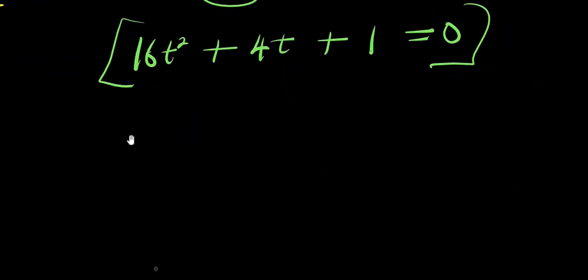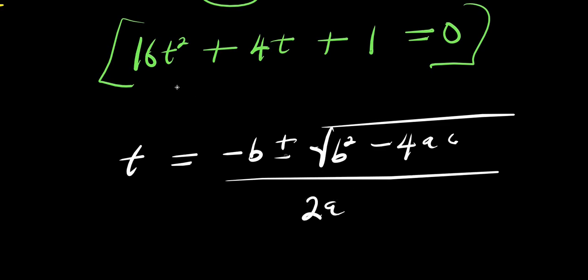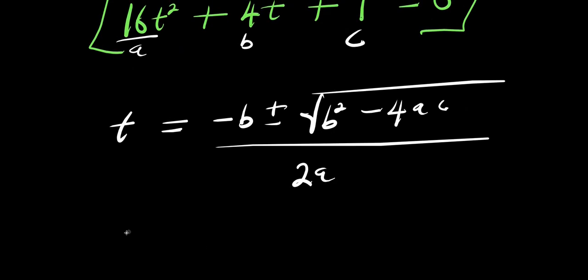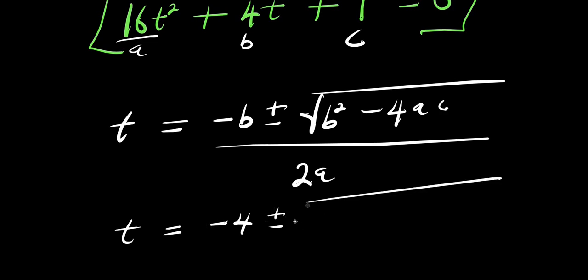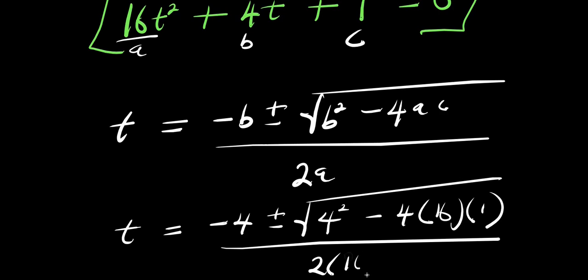For us to solve this we are going to make use of the quadratic formula: t equals negative b plus or minus square root of b squared minus 4 times a times c, divided by 2 times a. Here, a equals 16, b equals 4, and c equals 1. So I am going to insert these values: t equals negative 4 plus or minus square root of 4 squared minus 4 times 16 times 1, divided by 2 times 16.